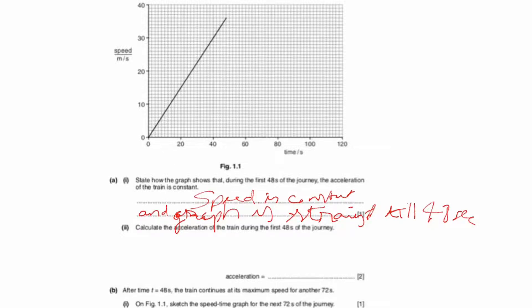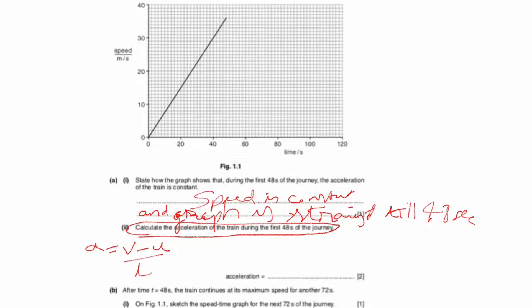Now for part B, we calculate the acceleration of the train during the first 48 seconds of the journey. Acceleration means change in velocity divided by time. So acceleration equals rate of change of velocity, which is final velocity minus initial velocity divided by time: a = (v - u) / t.